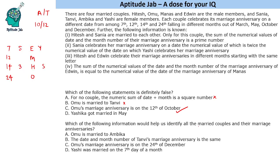Which information would help us identify all married couples and their marriage anniversaries? Four pieces of information are missing. 'Oumu is married to Ambika' gives the couple but not the dates. We need a statement that gives both the date and the couple name. 'The date and month number of Tanvi's marriage anniversary is the same' — that is applicable only in one case, giving us both the date and the couple. Oumu's anniversary date alone gives the date but not the couple. And 'Yashi was married on the seventh' is already known. So the statement about Tanvi gives us the complete information.